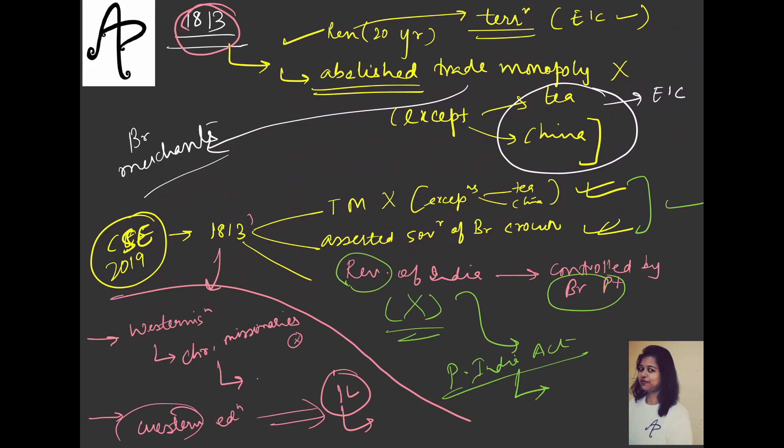Apart from that, the powers of the council were increased a bit. And the councils of Madras, Bombay, for their regulations also it was said that you have to put all the details in front of the British Parliament, etc. These things are not that important. Three-four things you have to remember: one is abolition of trade monopoly except T and China, second was very important about asserting the sovereignty of British Crown, third is Christian missionaries, and fourth is for Western education, setting aside one lakh rupees. If you remember these four, you're good to go with the 1813 act.